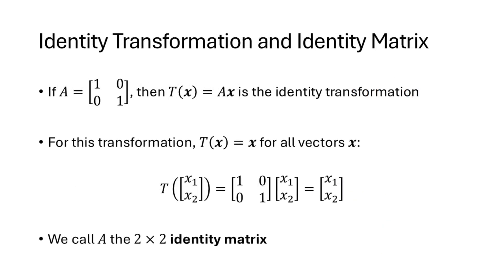One special case is when A is the matrix 1, 0, 0, 1. And in this case T of x equals A x, that transformation is what's called the identity transformation. This transformation has the property that T of x is just x. You can see the calculation here. If we plug a vector x1, x2 into this transformation, we just get back the exact vector that we plugged in x1, x2. And in this case, T is the identity transformation, and A, this 2x2 matrix, is called the identity matrix. We're going to see this again a little bit later in the course.